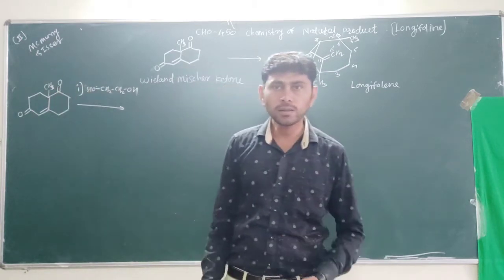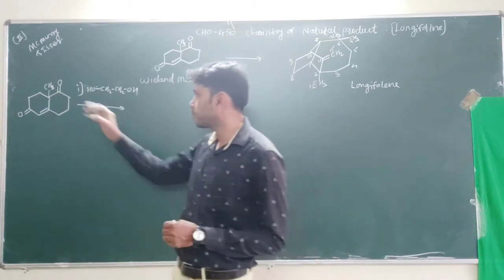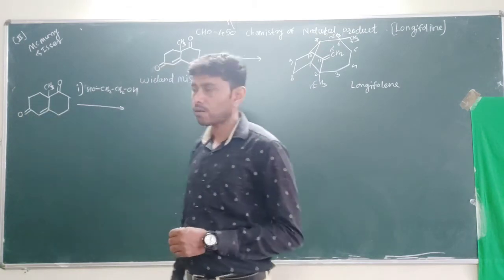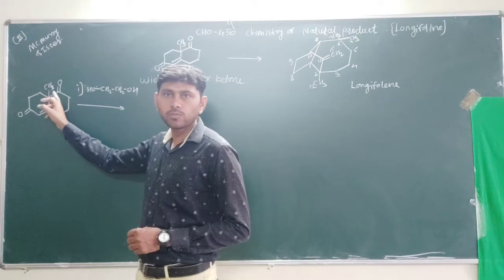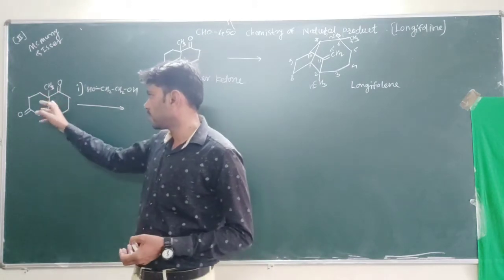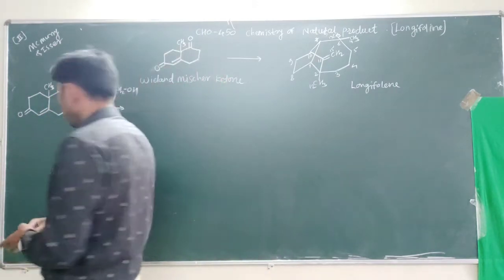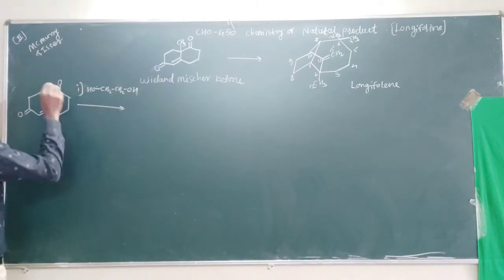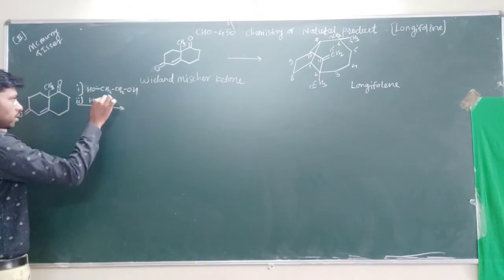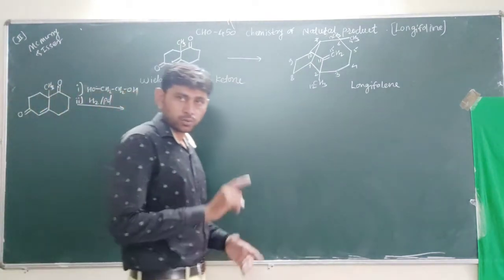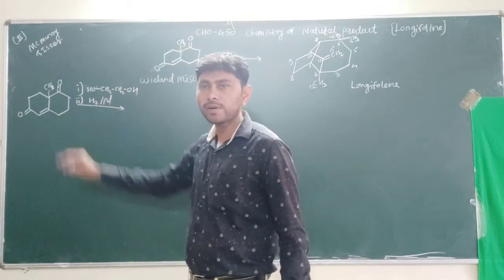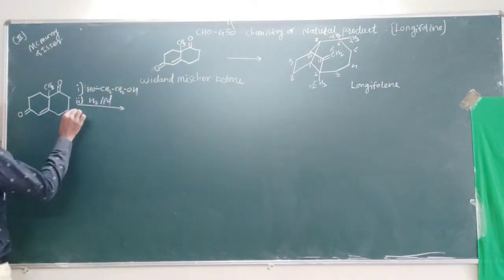We want reaction only on the carbon containing the conjugated carbonyl group, and we do not want to involve the other carbonyl group in the reaction. So we protect that group using the diol. After protection, we use the reagent H2 in the presence of palladium, whose role is to reduce the carbon-carbon double bond. So reduction of the C=C double bond is accomplished here.